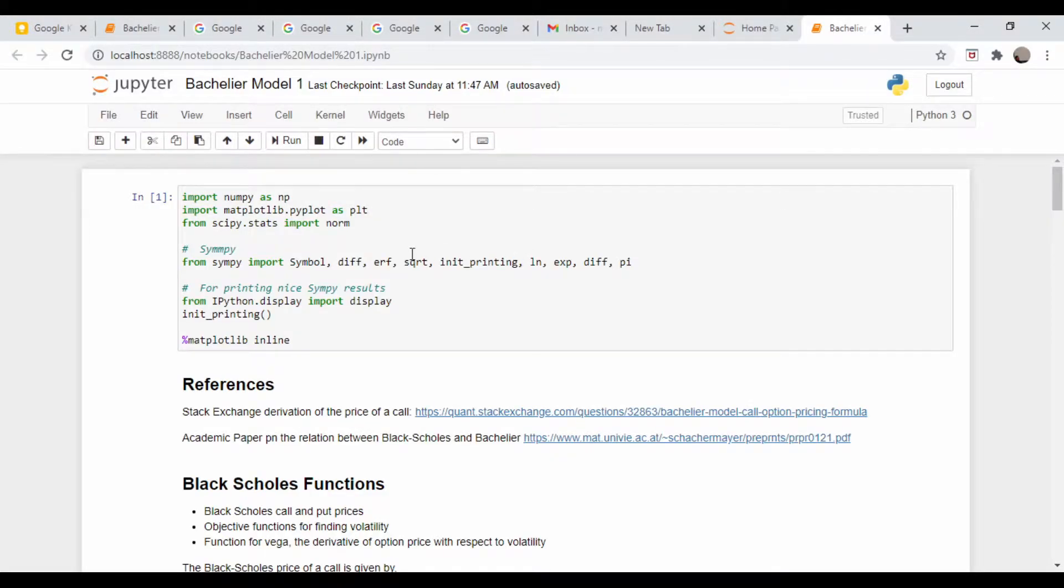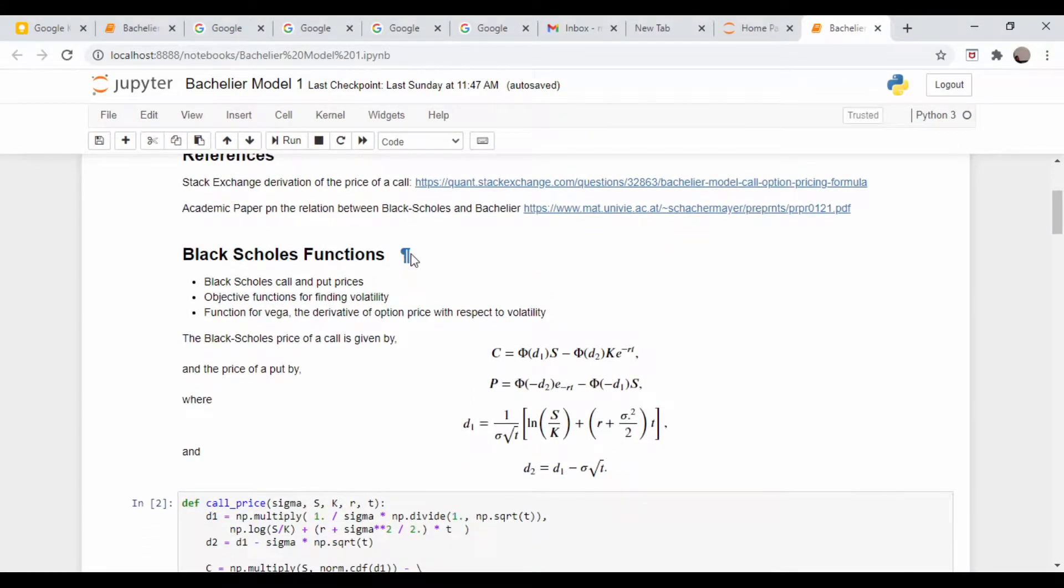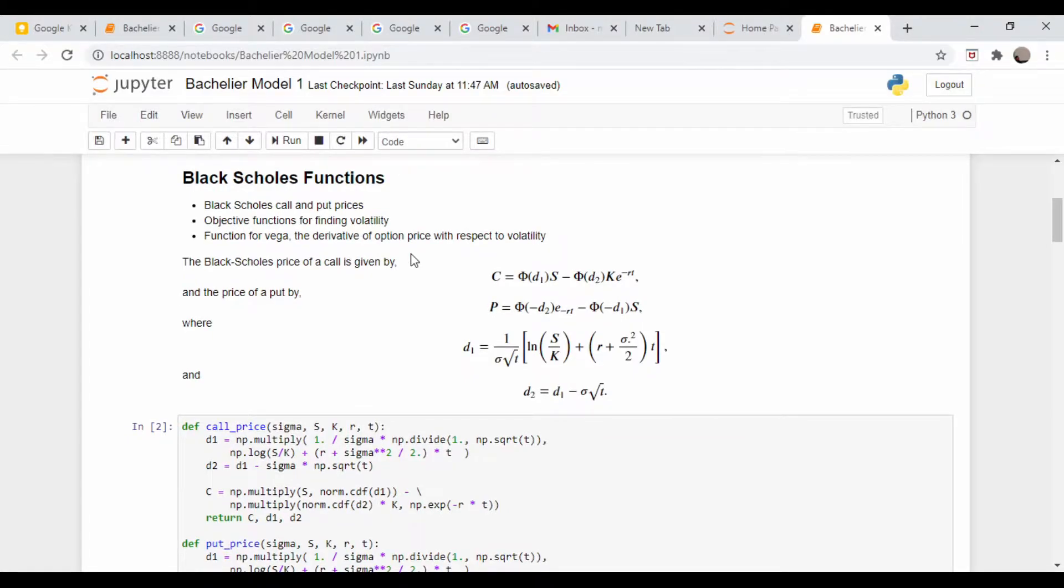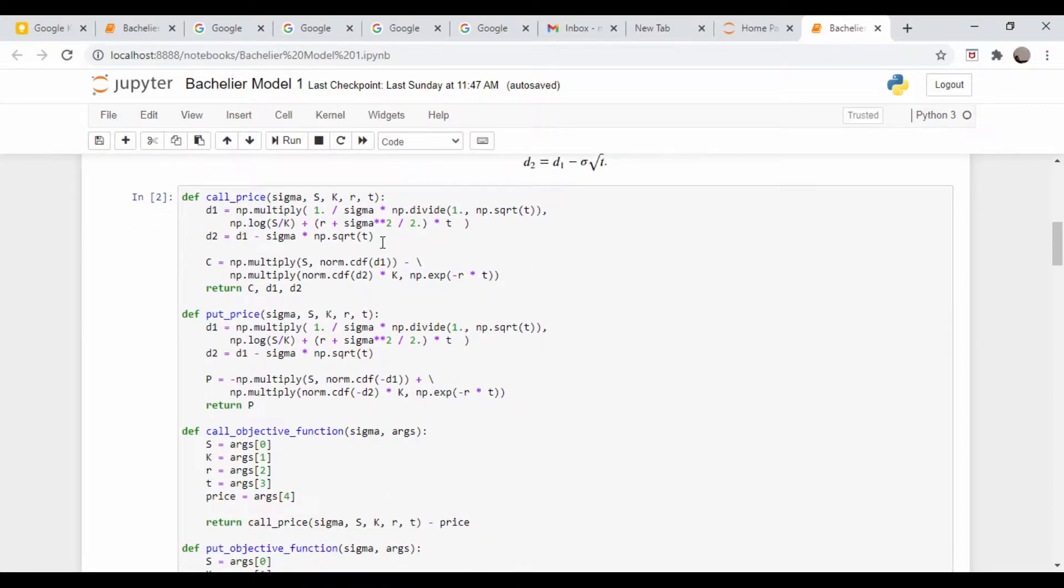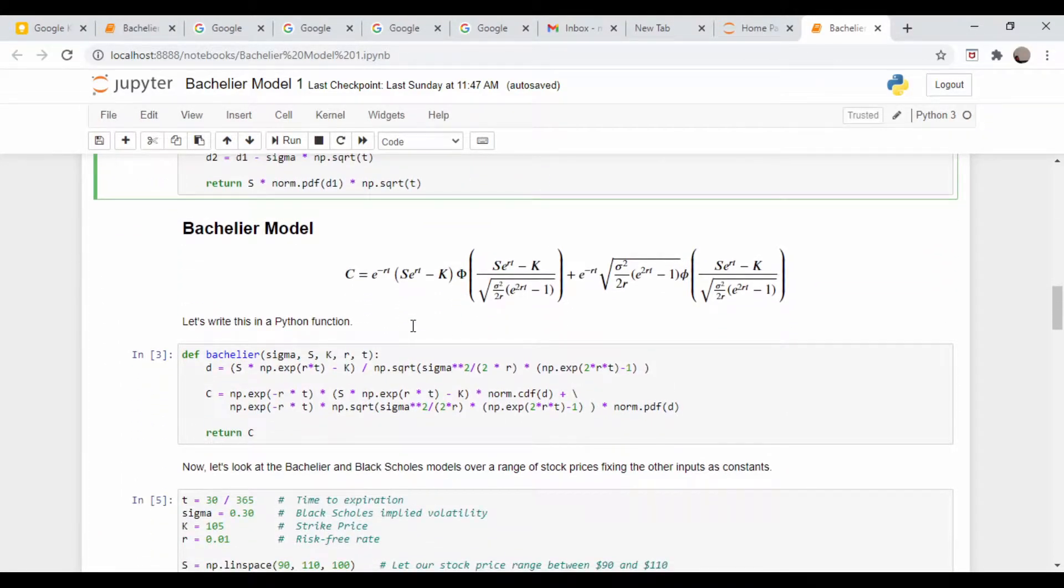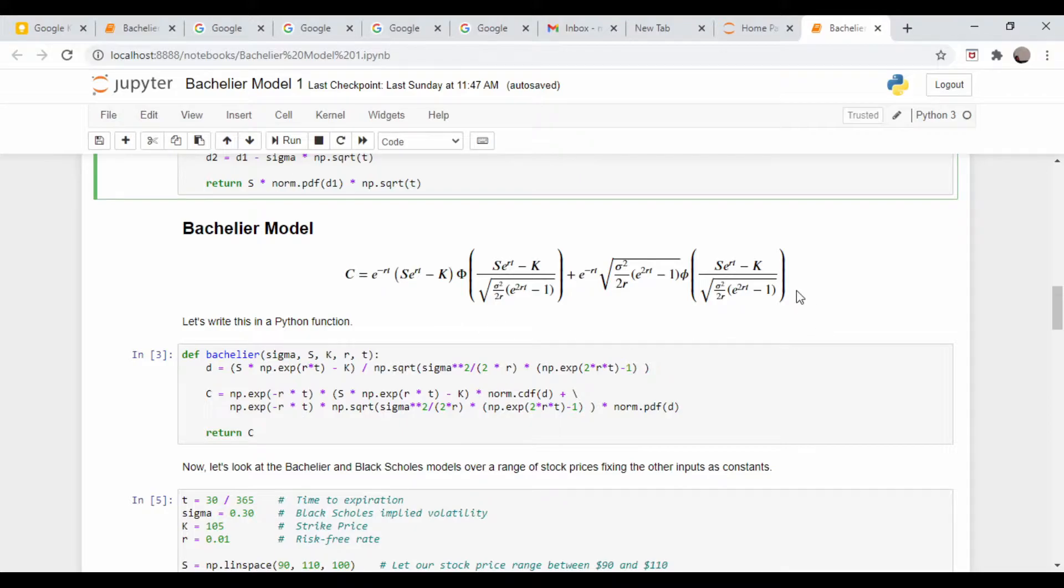This is our notebook from last time. Recall we did a comparison between Bachelier and Black-Scholes, here are our Black-Scholes equations. We had also pulled in our Black-Scholes functions, here's the call price, here's the put price. And then we just did the Bachelier price of a call.